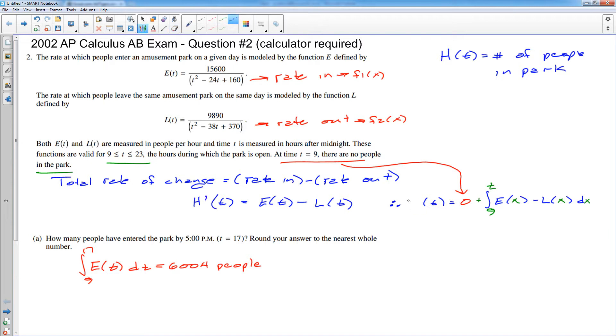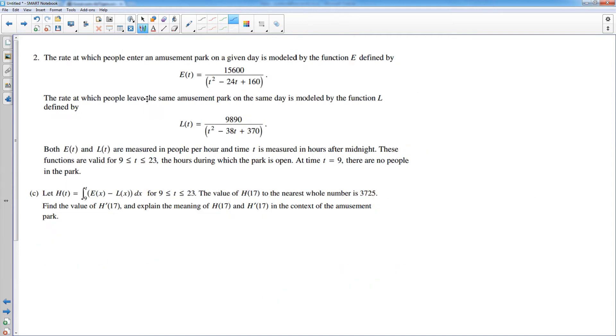And this would be H of T here. But they were very nice because they told you what the function H was. It is not uncommon for them to ask you to generate the function on your own. And that's why I spent the time before we started A showing you how to generate that. So there's H of T. That is the number of people in the park. Find the value of H of 17 to the nearest whole number. I did not read that correctly. They just gave it to you. The value of H of 17 is 3725.